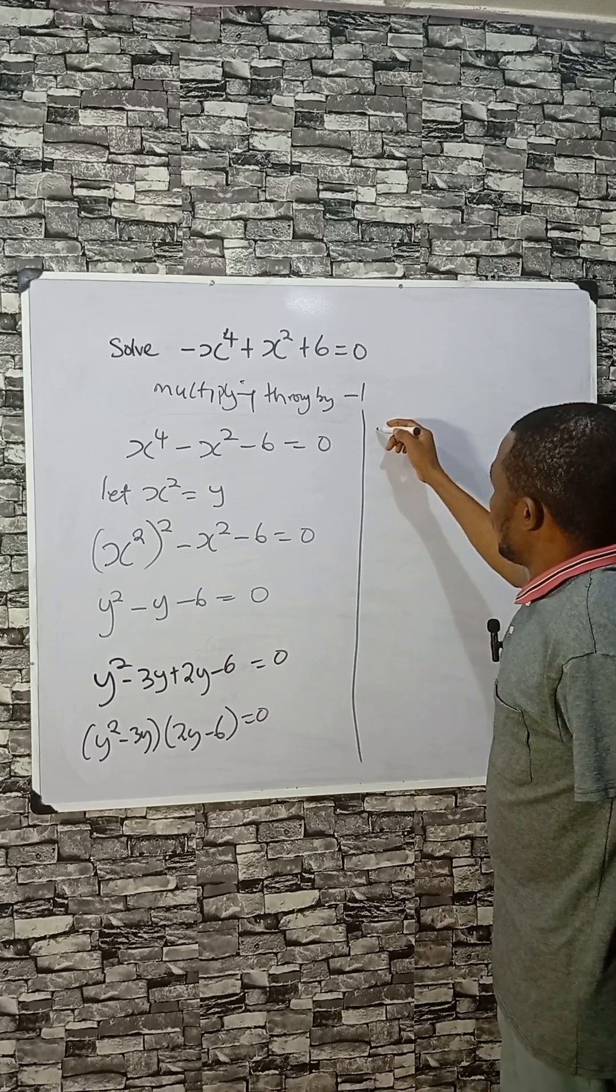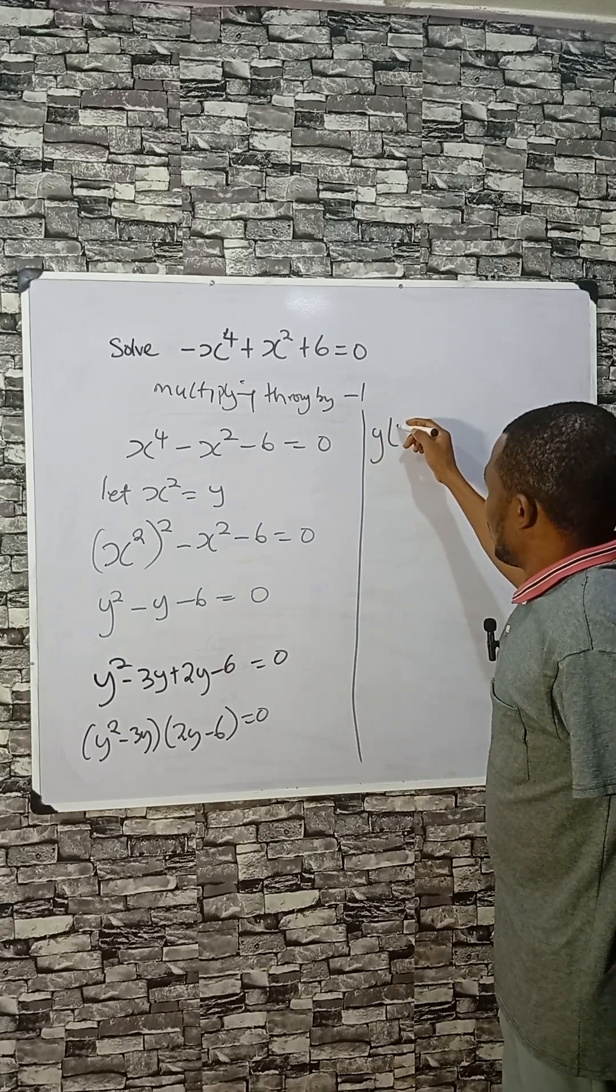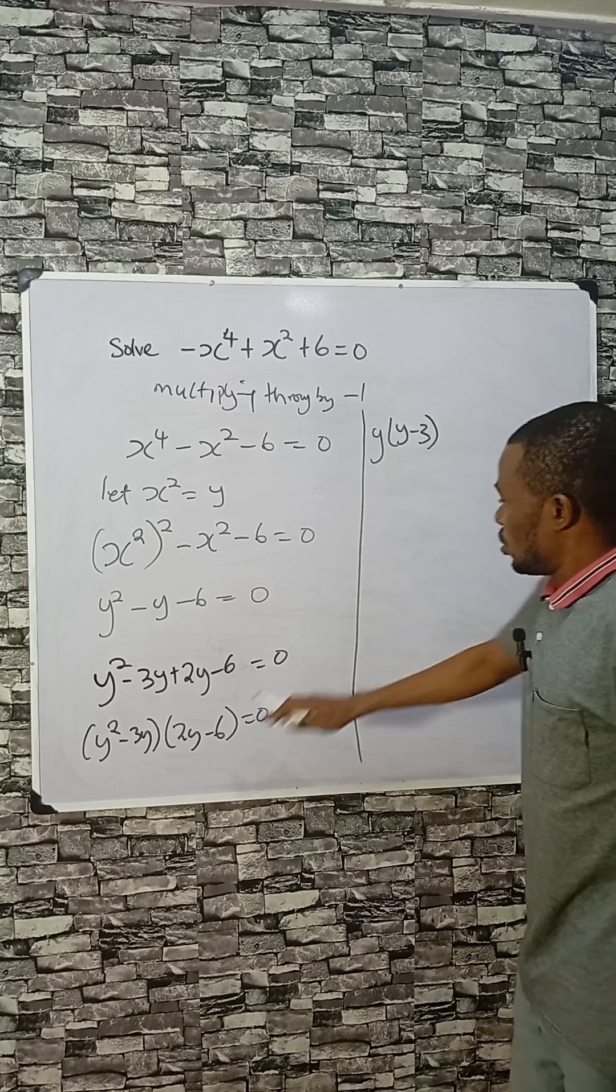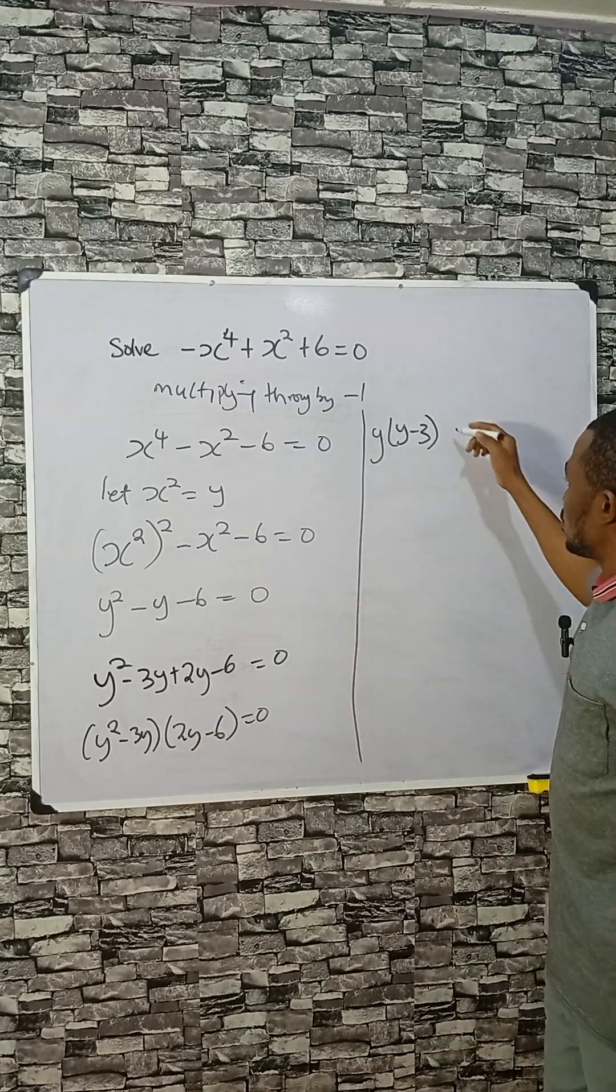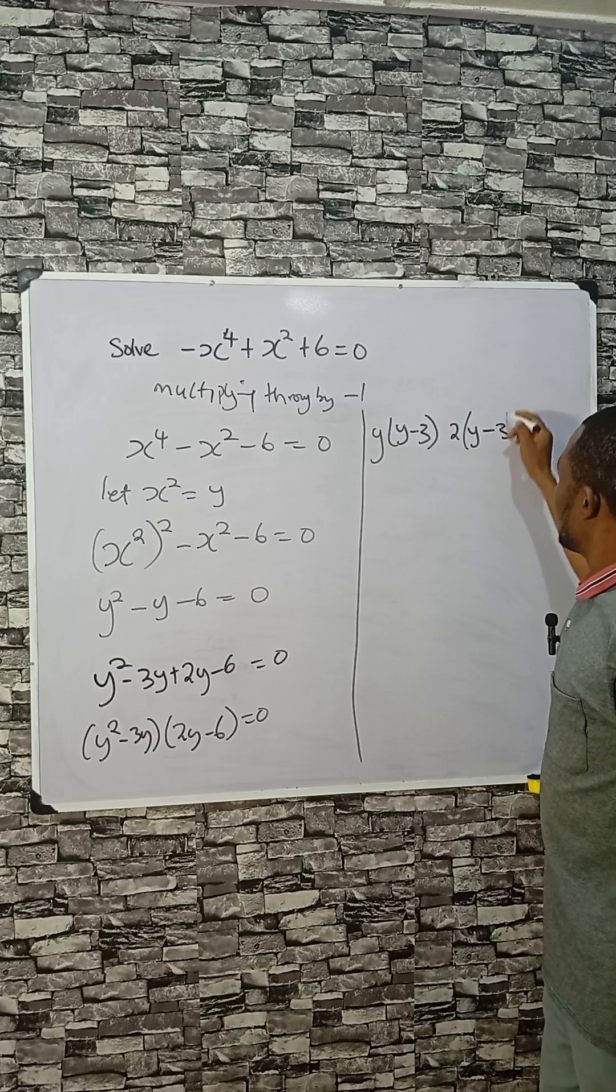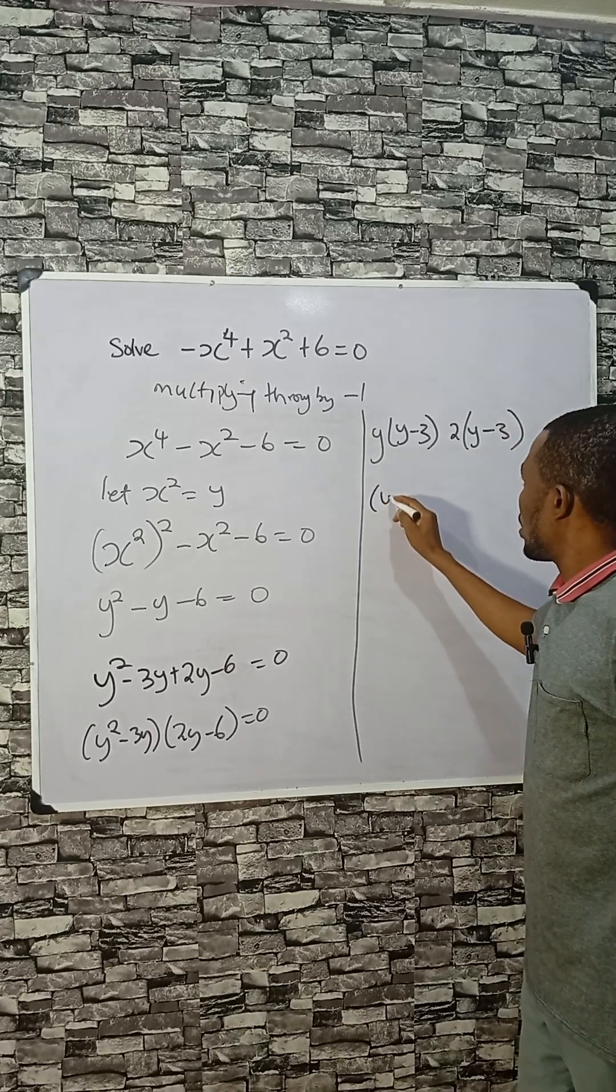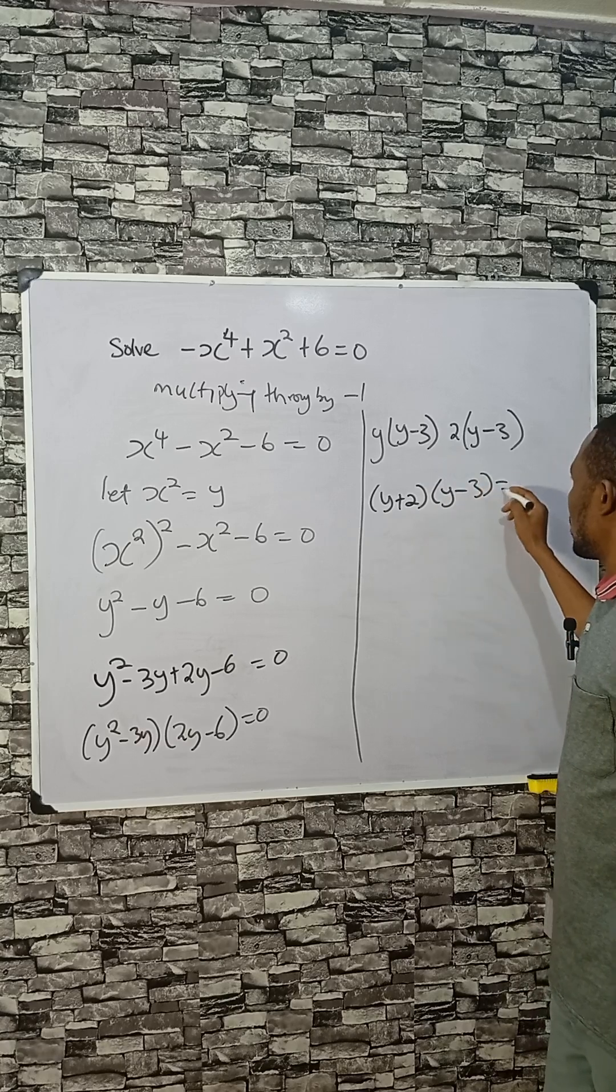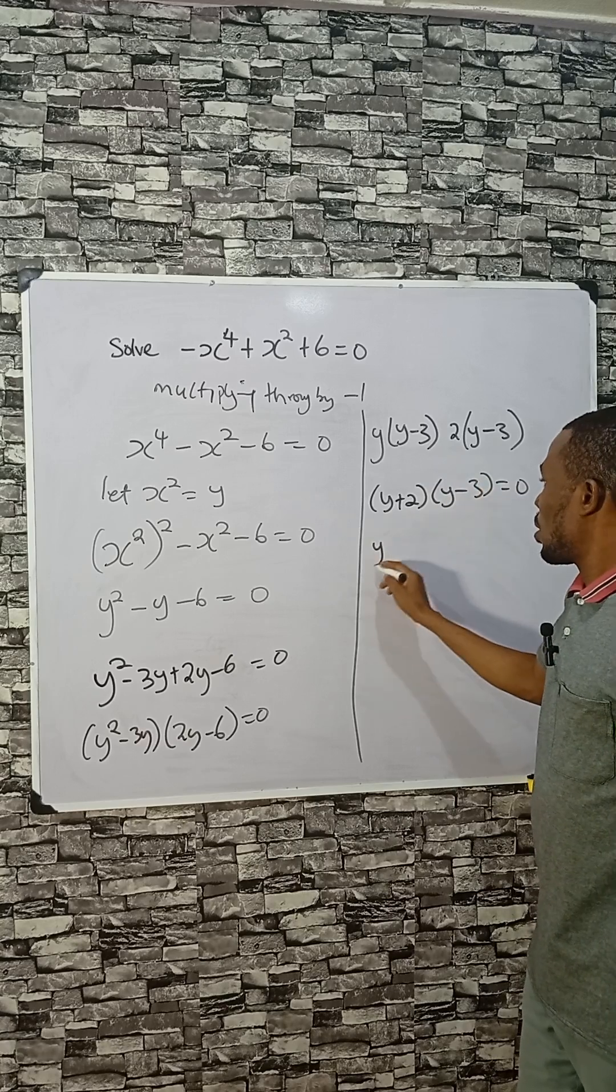Considering this, we have y into y minus 3, and the second bracket here what is common is 2. So 2 into y minus 3. We have y plus 2 and y minus 3 equal to zero. From here, y equals to minus 2 or positive 3.